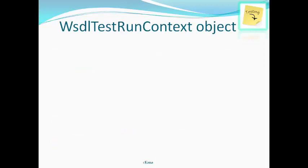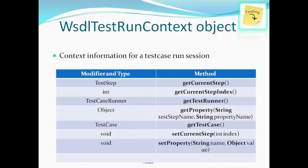The test run context object contains the context information for a test case run session. Its methods include: getCurrentStep, which returns a test step; getCurrentStepIndex, which returns an int; getTestRunner, which returns a test case runner; getProperty(String), which returns an object; getTestCase, which returns a test case; setCurrentStep, which takes the current step as an index; and setProperty, which sets a property of the test case.